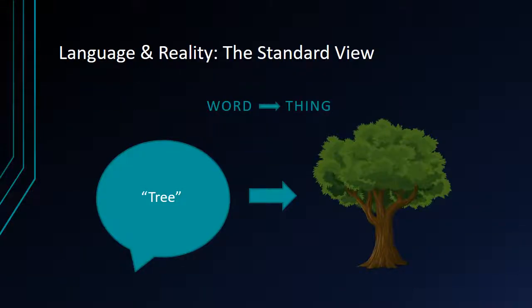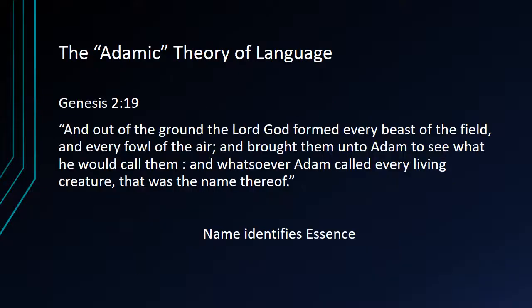Let us begin with what might be called the standard or common sense understanding of language. This is the way we behave generally when we speak — that we understand a word to represent a thing in reality. So if someone says the word 'tree,' what they mean is some specific tree, some actual thing in the world. We might call this the Adamic theory of language, after the instructions given to Adam in Genesis about how to name the animals.